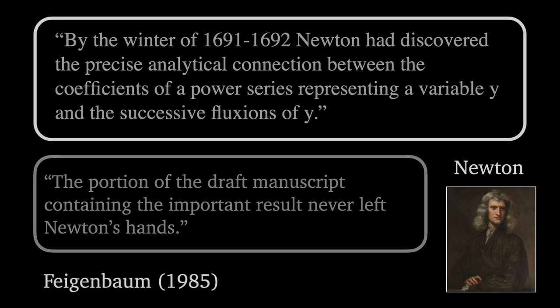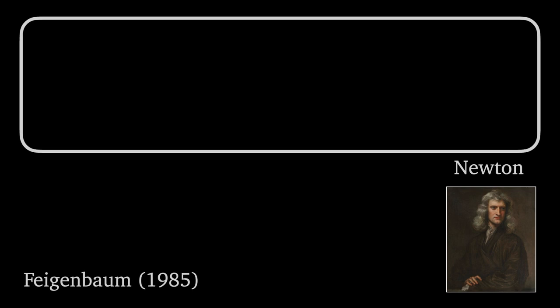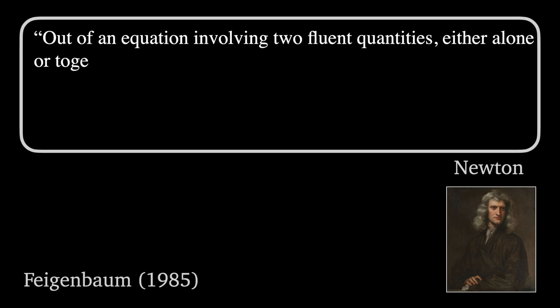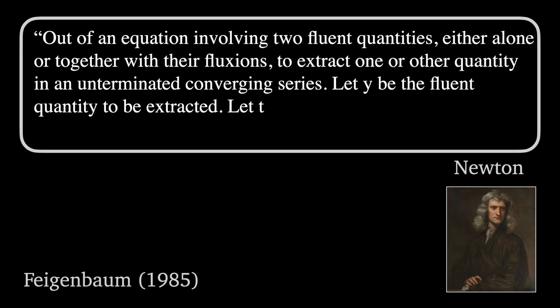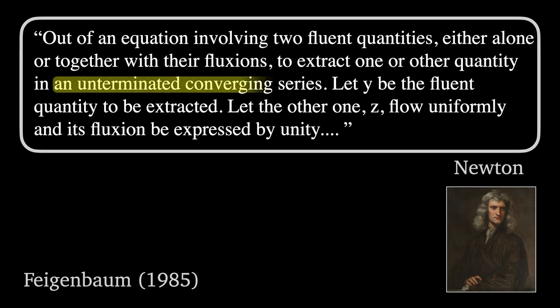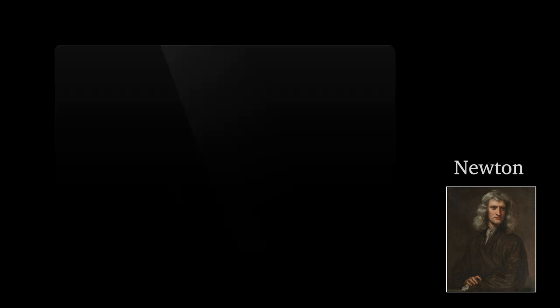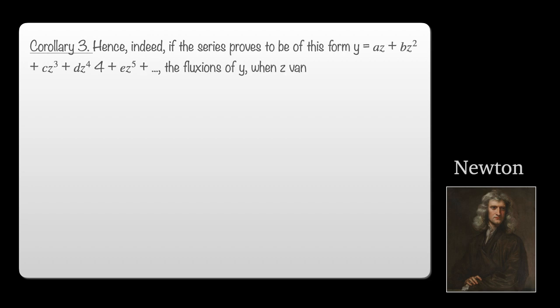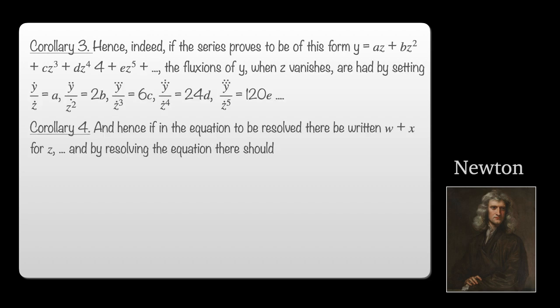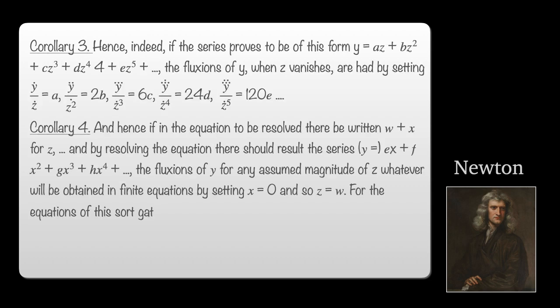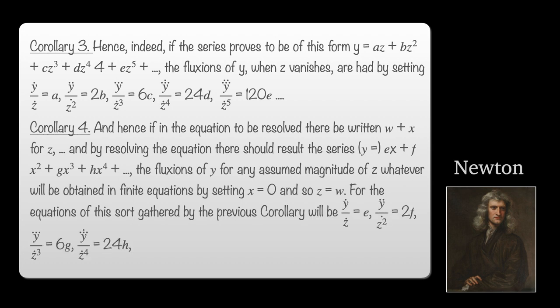In this unpublished manuscript, Newton starts with the premise that a function can be equated to an unterminated converging series. From this, he gives a number of results. Specifically, Corollary 3, which describes the method of finding the coefficients of a power series expansion about 0, and Corollary 4, which gives a power series expansion about W.